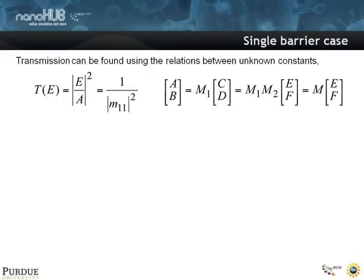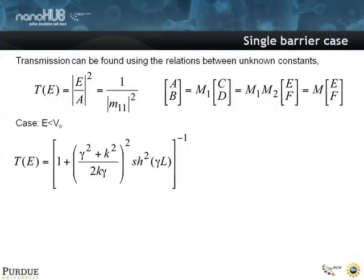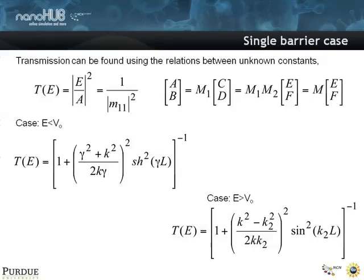The transmission coefficient is the square ratio of e over a, of the transmitted over the incident wave, which is 1 over this matrix element m11 squared. So there's two cases to look at. If the energy is less than the barrier, you can calculate an analytic expression that has a hyperbolic sine in it. You can look at an expression that's slightly different for energies above the barrier. And interestingly, this has a sine component to it. You already see that in this sine component, that means that transmission over the barrier is not smooth. It is energy dependent, and it's energy dependent as a function of k2L.